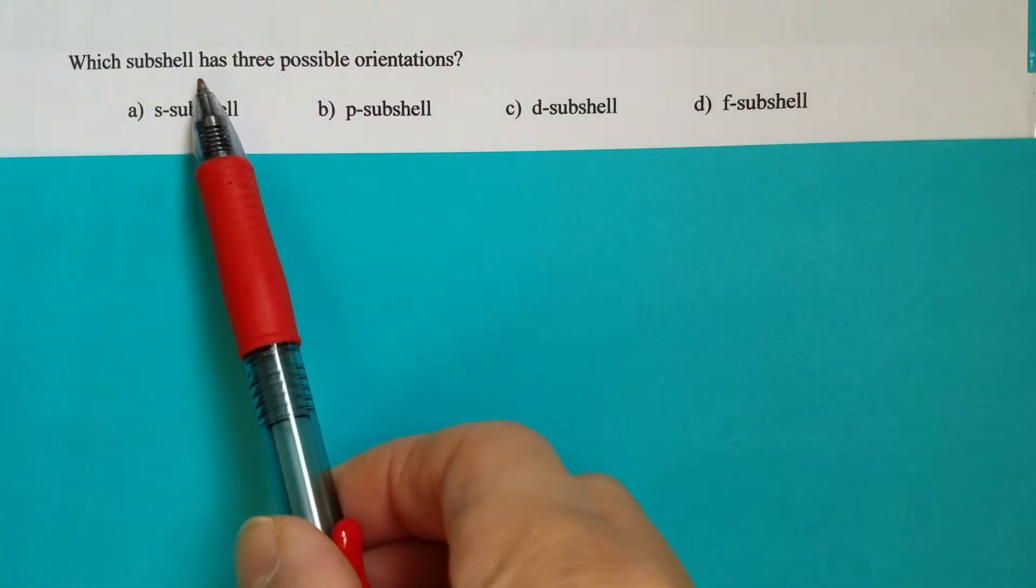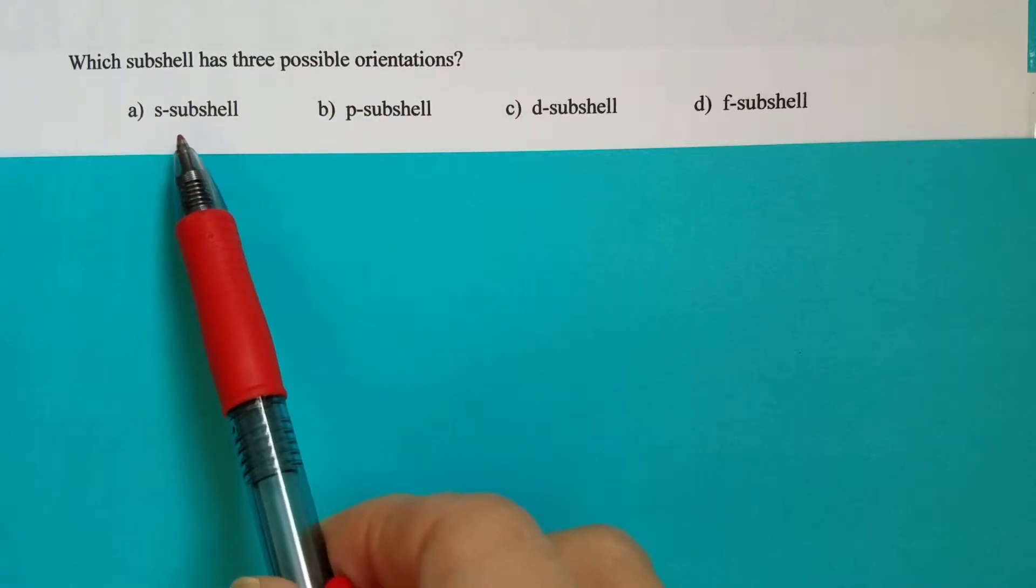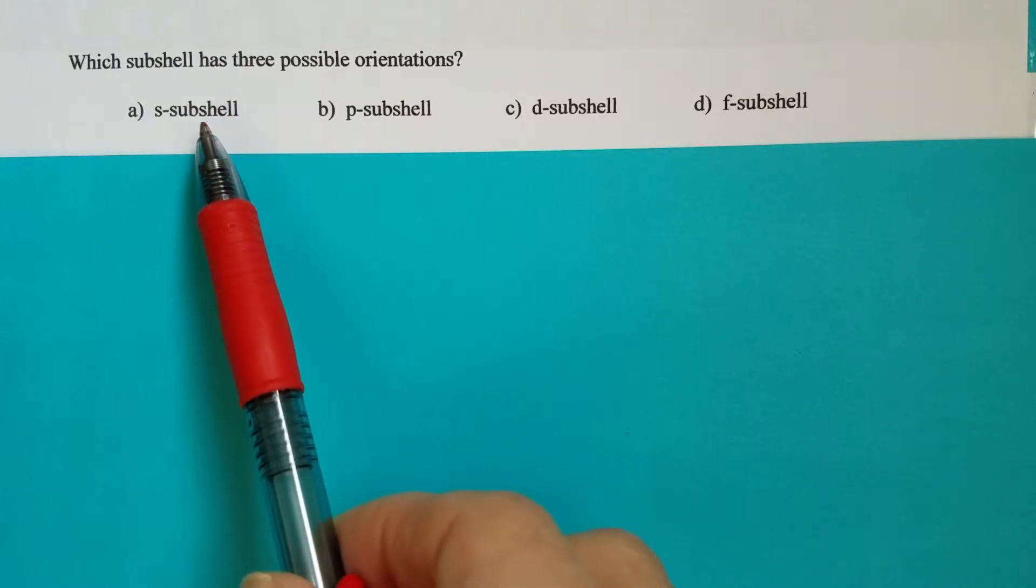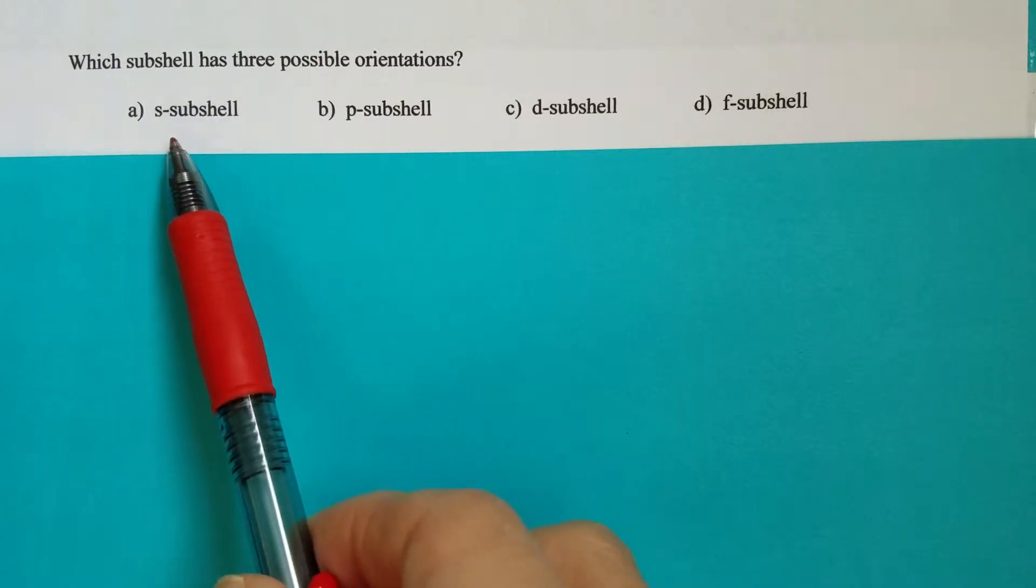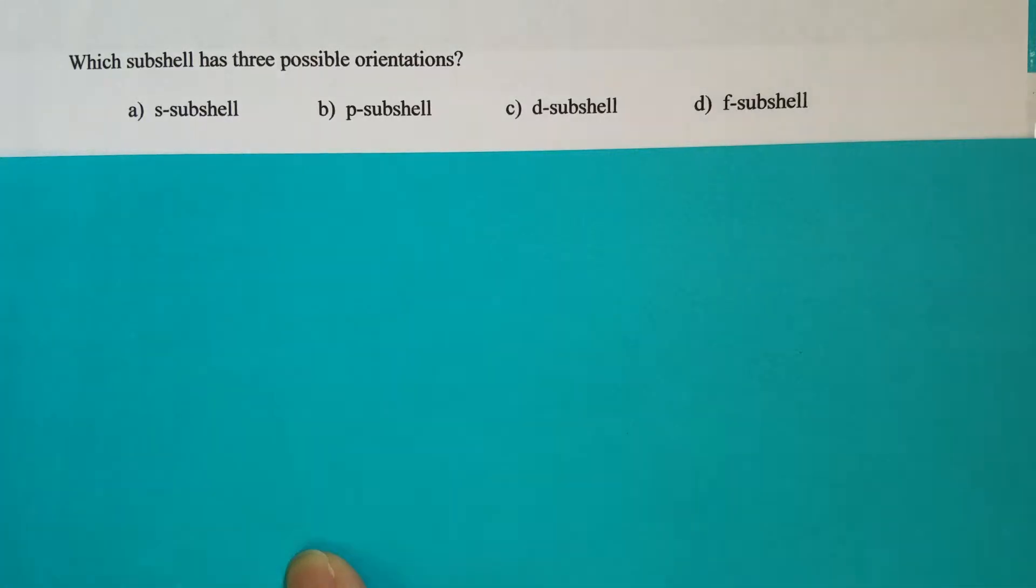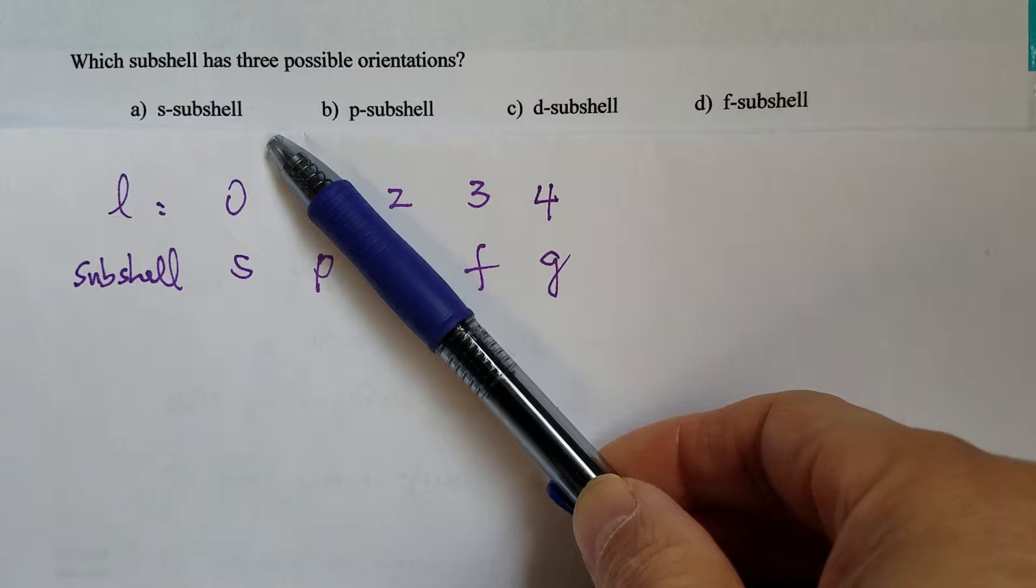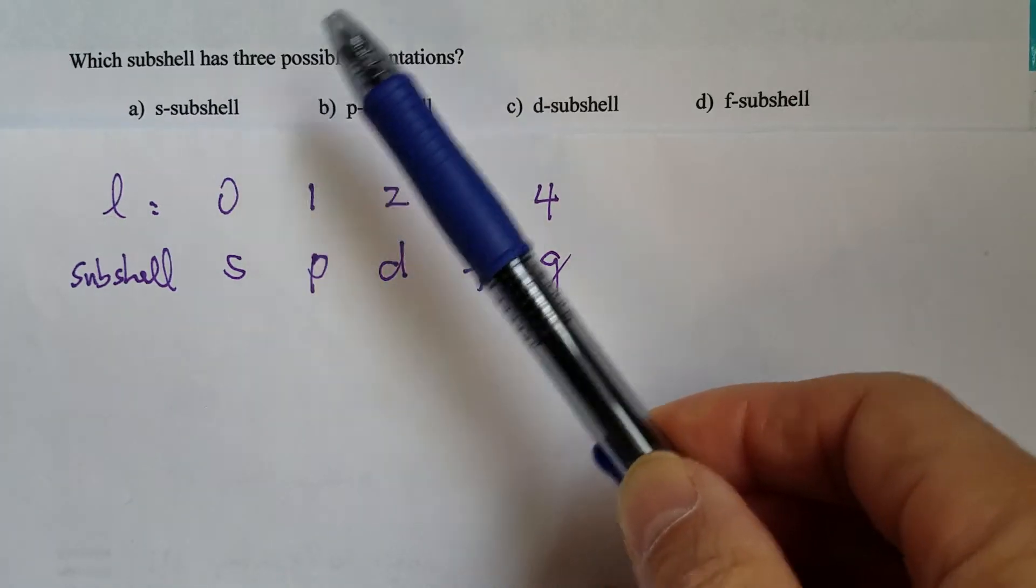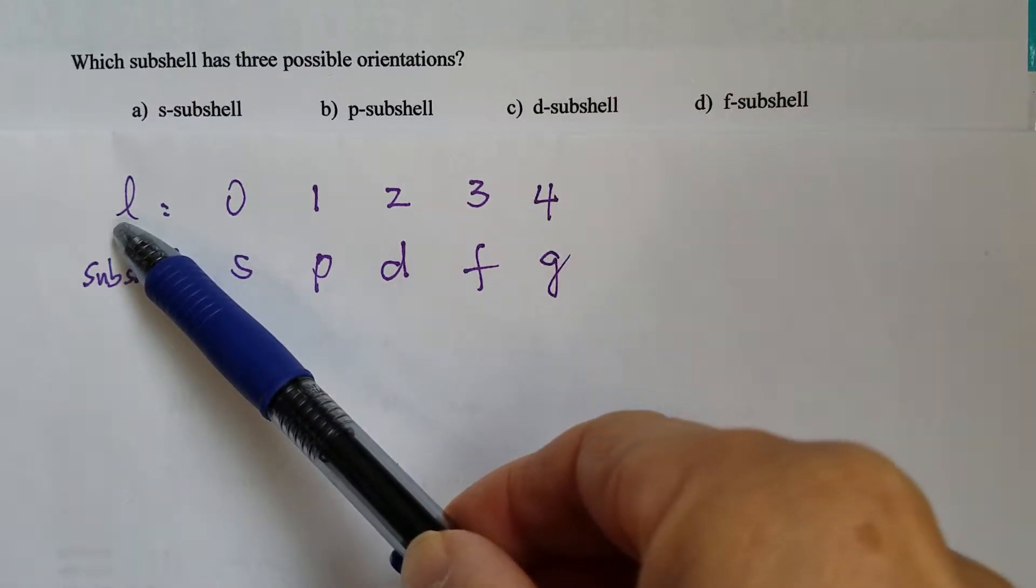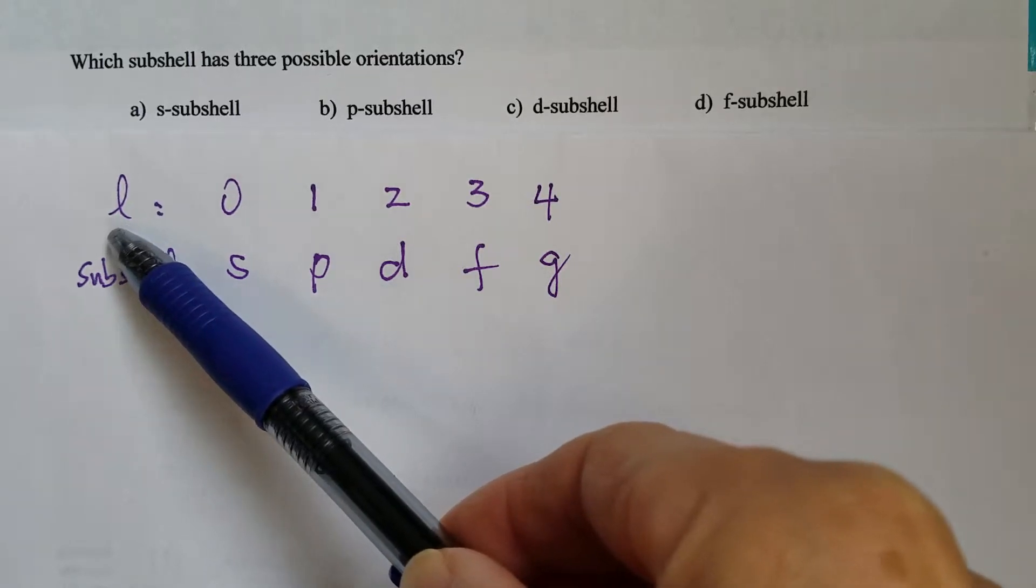Which subshell has three possible orientations? So we have different options, choices here: s-subshell, p-subshell, d-subshell, and f-subshell. Now let's recall what kind of quantum number is related with a subshell. It is the angular momentum quantum number L.